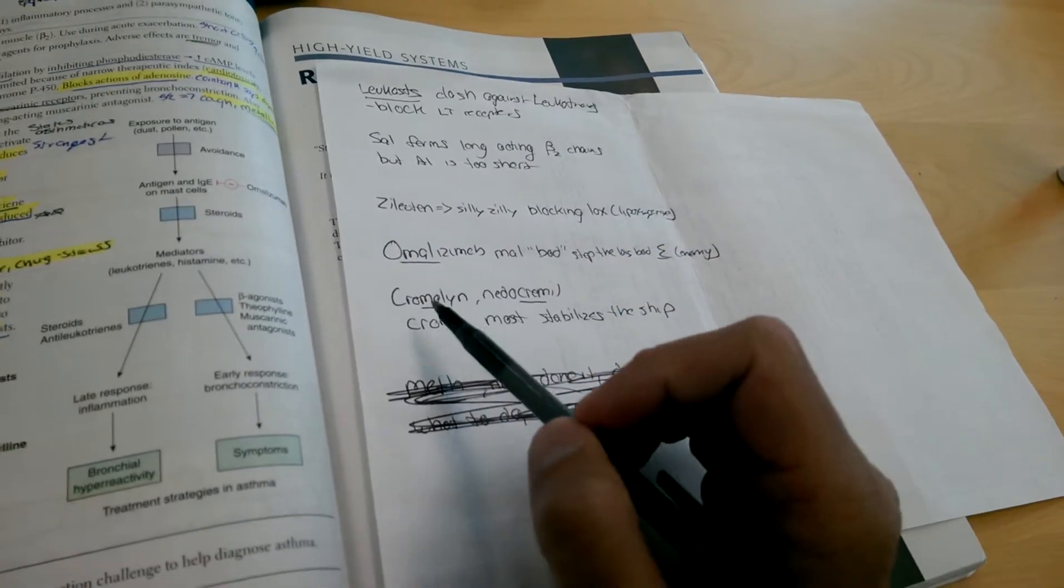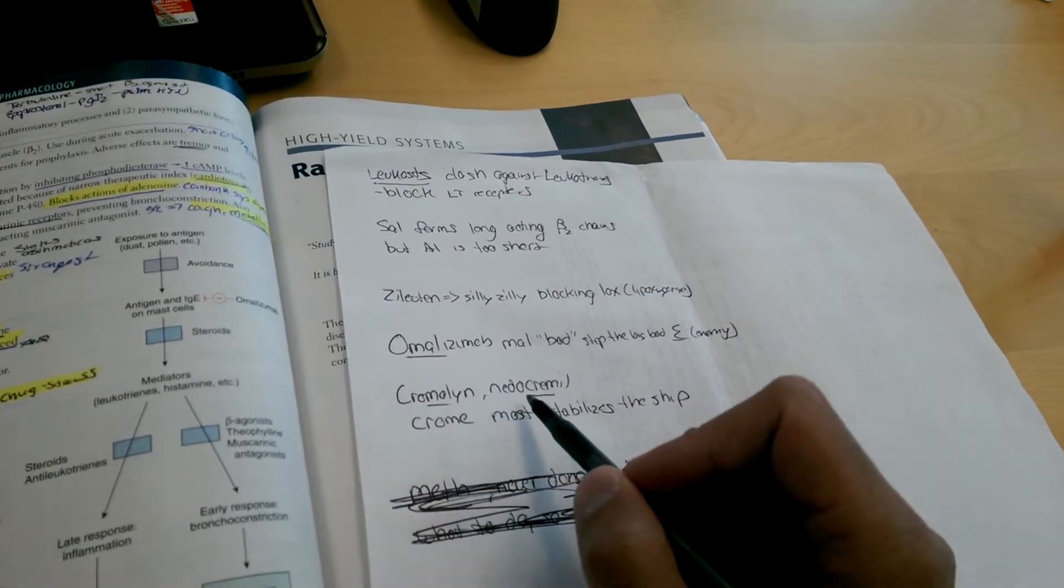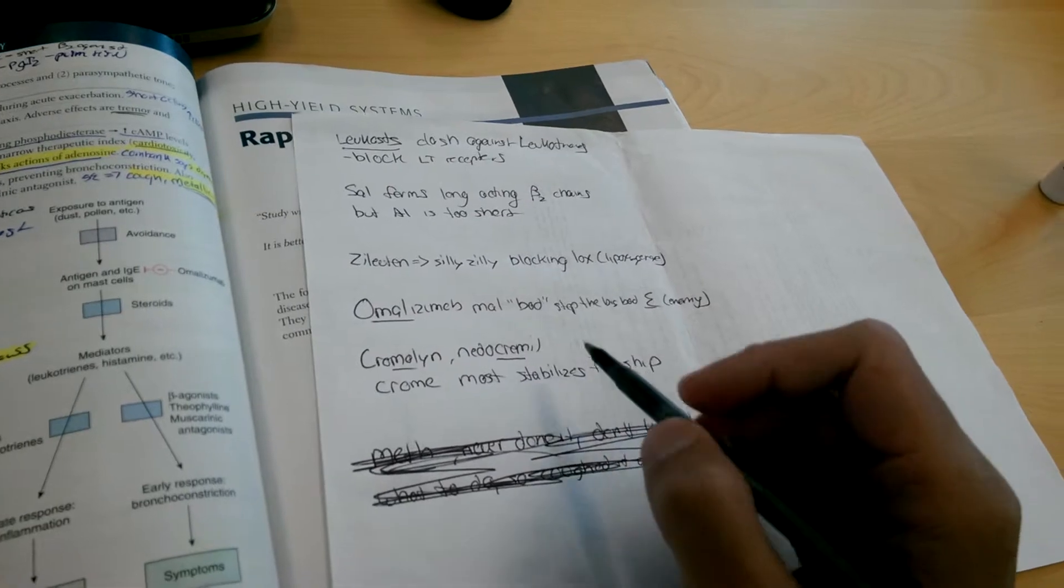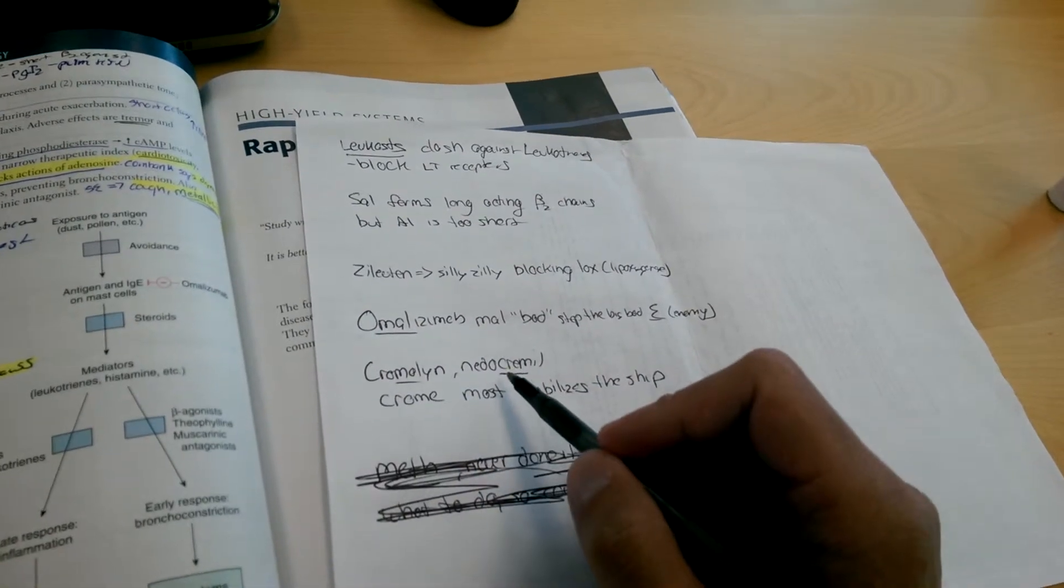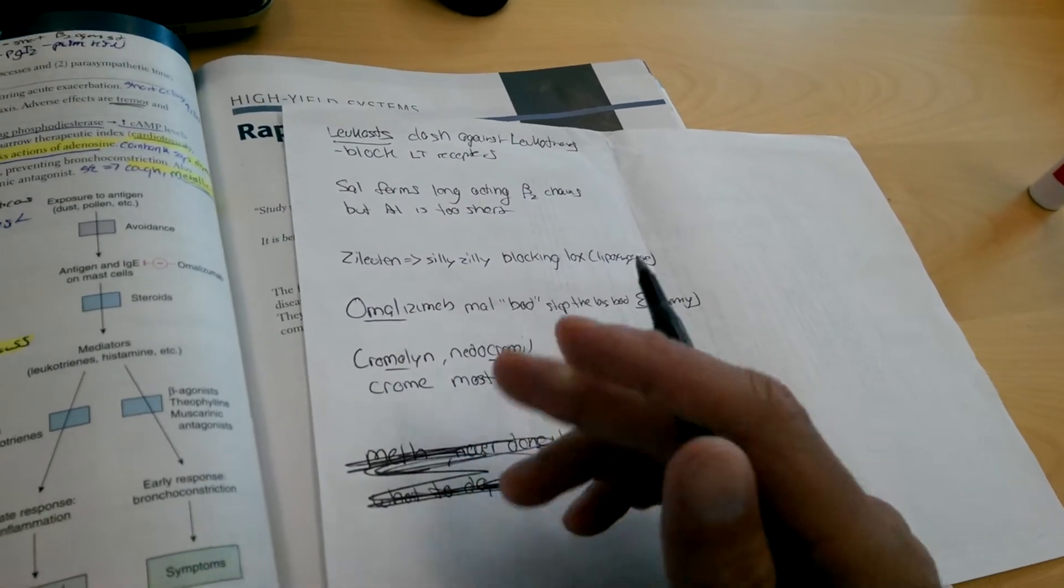And lastly, my favorite one. Cromolyn, nedocromil. Chrome, chrome mast stabilize the ship, so cromolyn and nedocromil stabilize mast cells so that they don't degranulate.